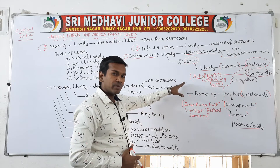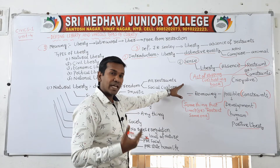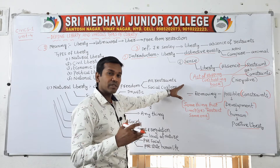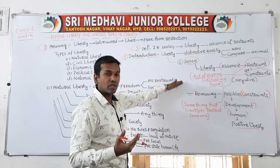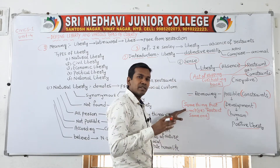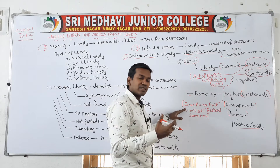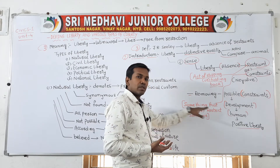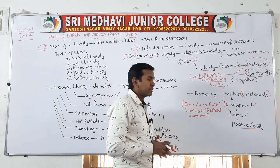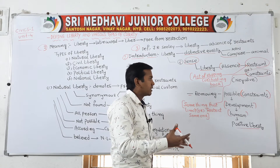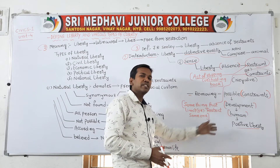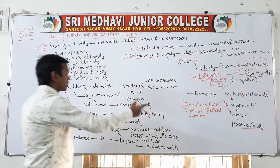In negative liberty, if there is an absence of restraints or constraints, that is called negative liberty. Restraints are the act of stopping or holding back. Constraints are something that limits or restricts someone. Positive liberty means if you remove all types of constraints, mainly for the development of human beings, that is called positive liberty.